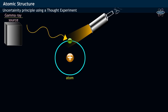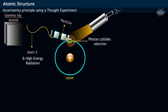At this moment, a short wavelength and high-energy gamma ray acting as a particle collides with the sub-atomic particle electron and thereby transfers its energy as well as momentum to the electron.